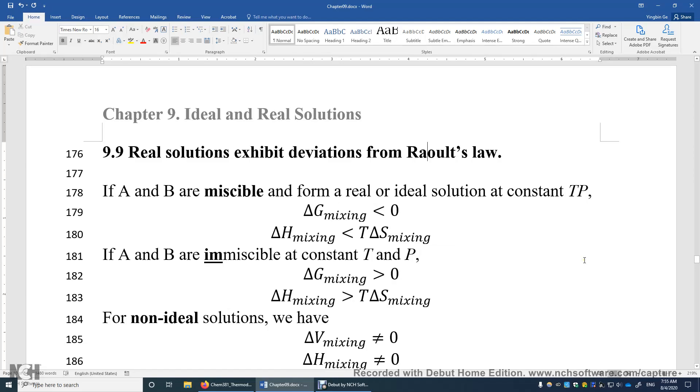Section 9.9: Real Solutions Exhibit Deviations from Raoult's Law. If A and B are miscible and form a real or ideal solution at constant temperature and pressure, we know the change of Gibbs energy is negative.